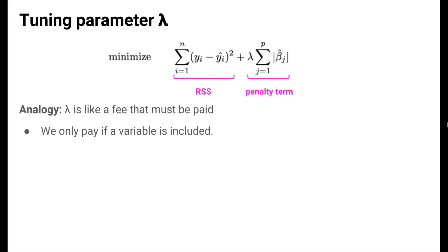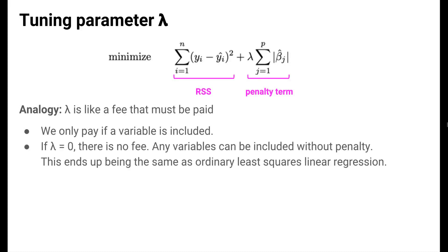Let's take a closer look at the tuning parameter lambda. We've said that the severity of the penalty is determined by lambda. We can think of lambda as a fee to be paid for including a variable in the model. We only pay if a variable is included, because lambda is multiplied by the estimated coefficient. If that coefficient is zero, the variable is not included, and we don't pay the lambda fee. Let's think about the most extreme values for lambda to get a better sense of how this penalty tuning parameter works. If we set lambda to zero, we're saying that we'll impose no fee for having variables in the model. Any variables can be included without penalty. In this case, LASSO ends up being the same as ordinary least squares, because the penalty term goes away.